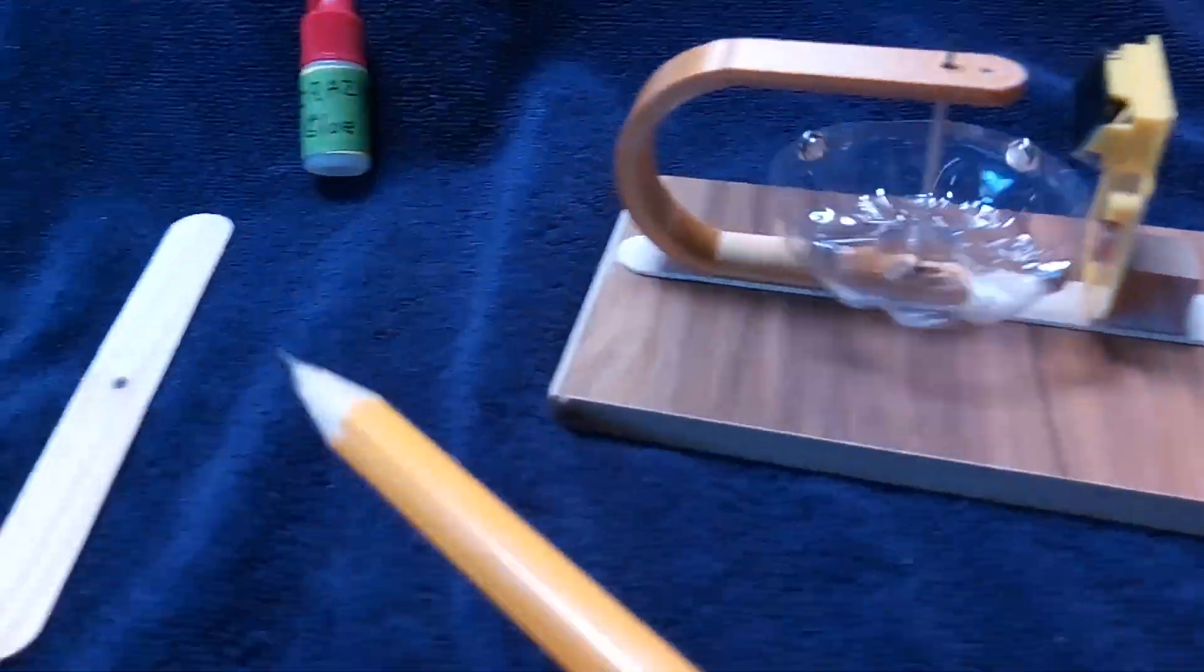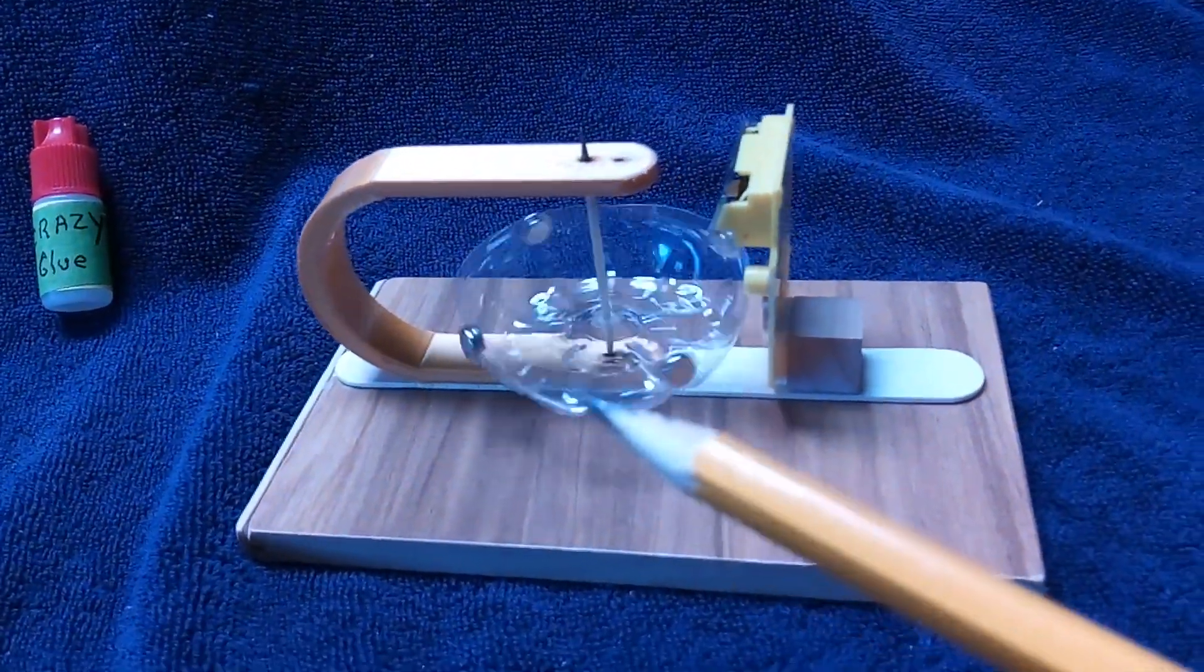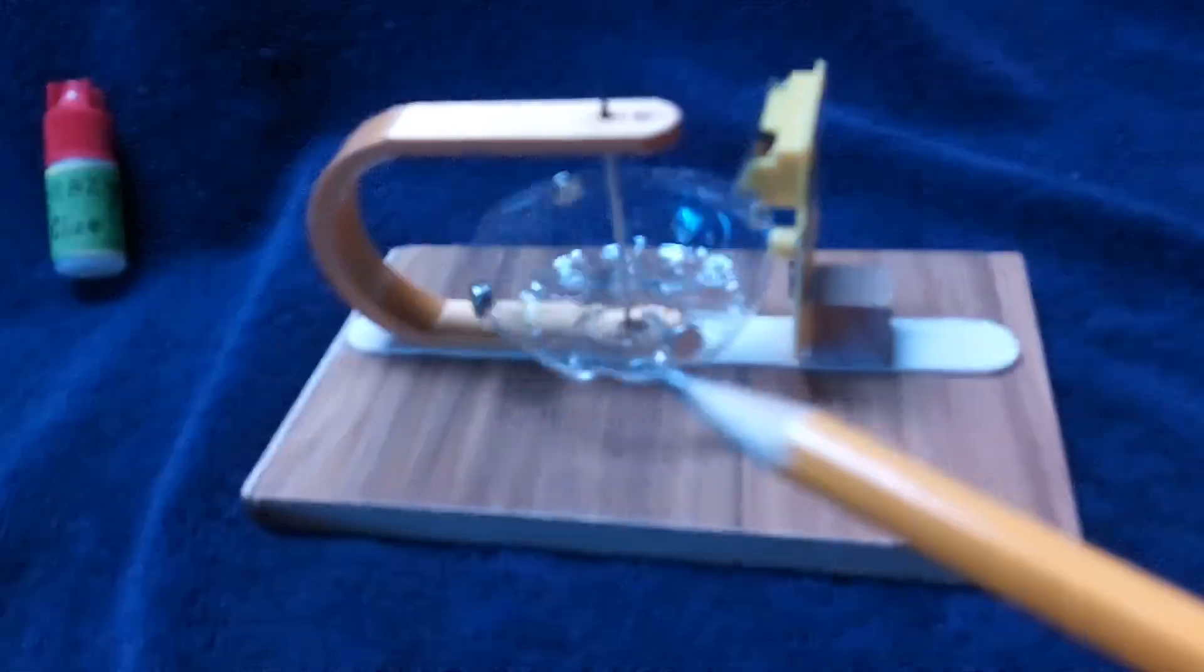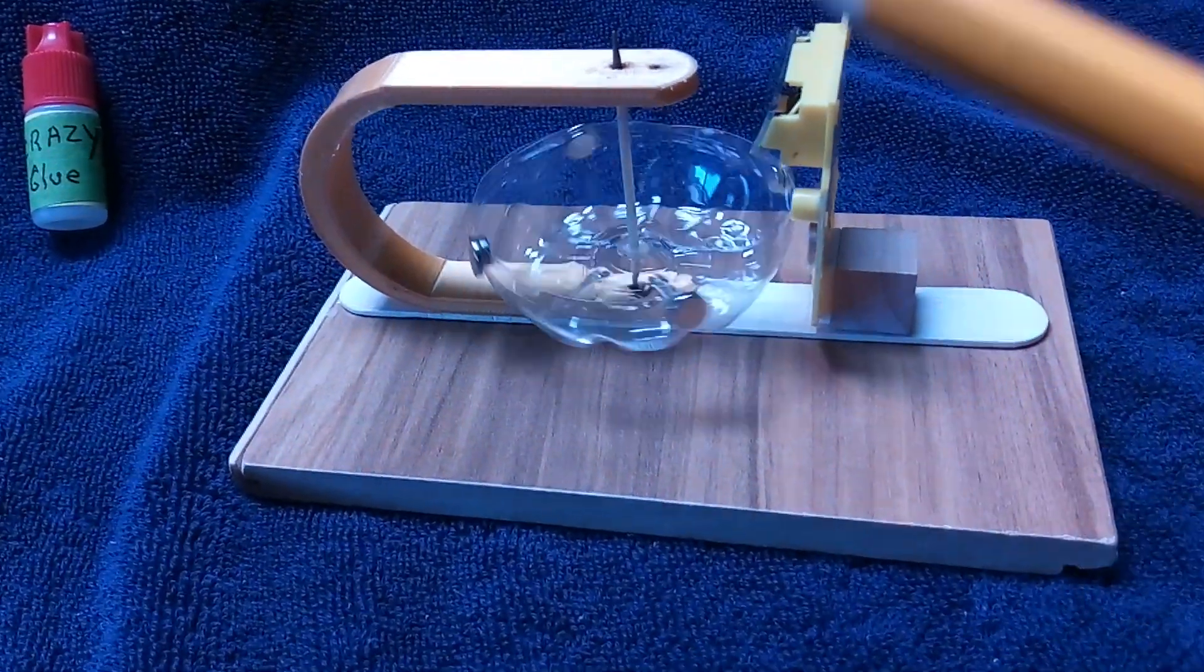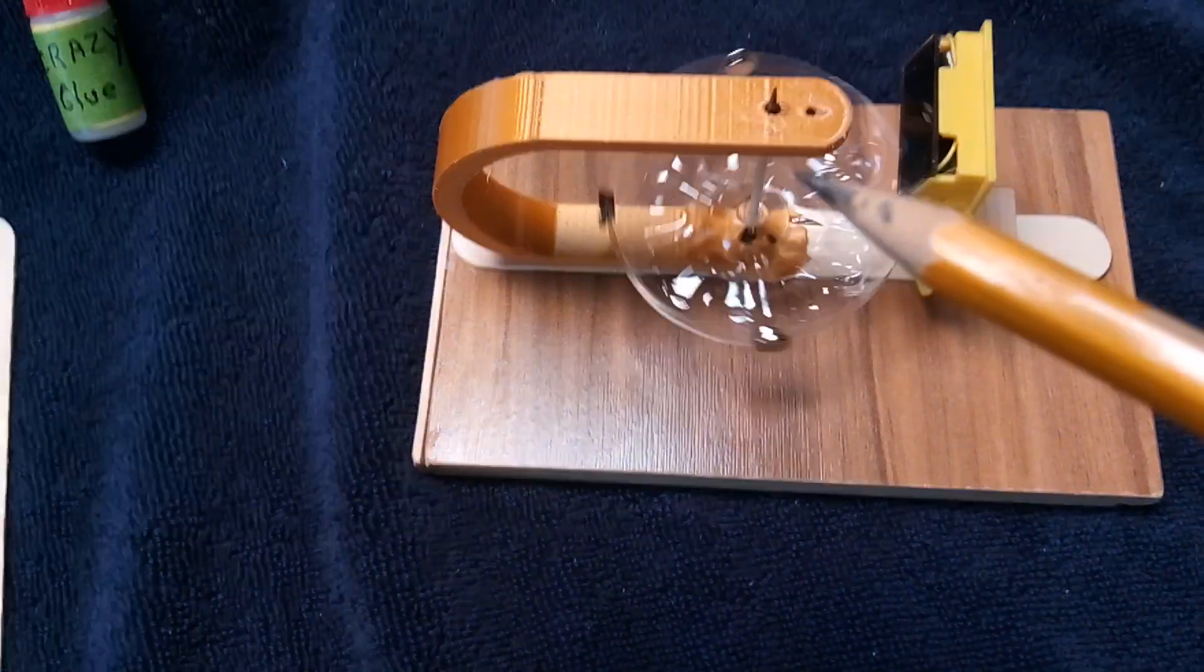I'm trying out the crazy glue and toothpick bearing, and this is coming together pretty nice. The combination of crazy glue and graphite makes for a pretty good bearing surface.